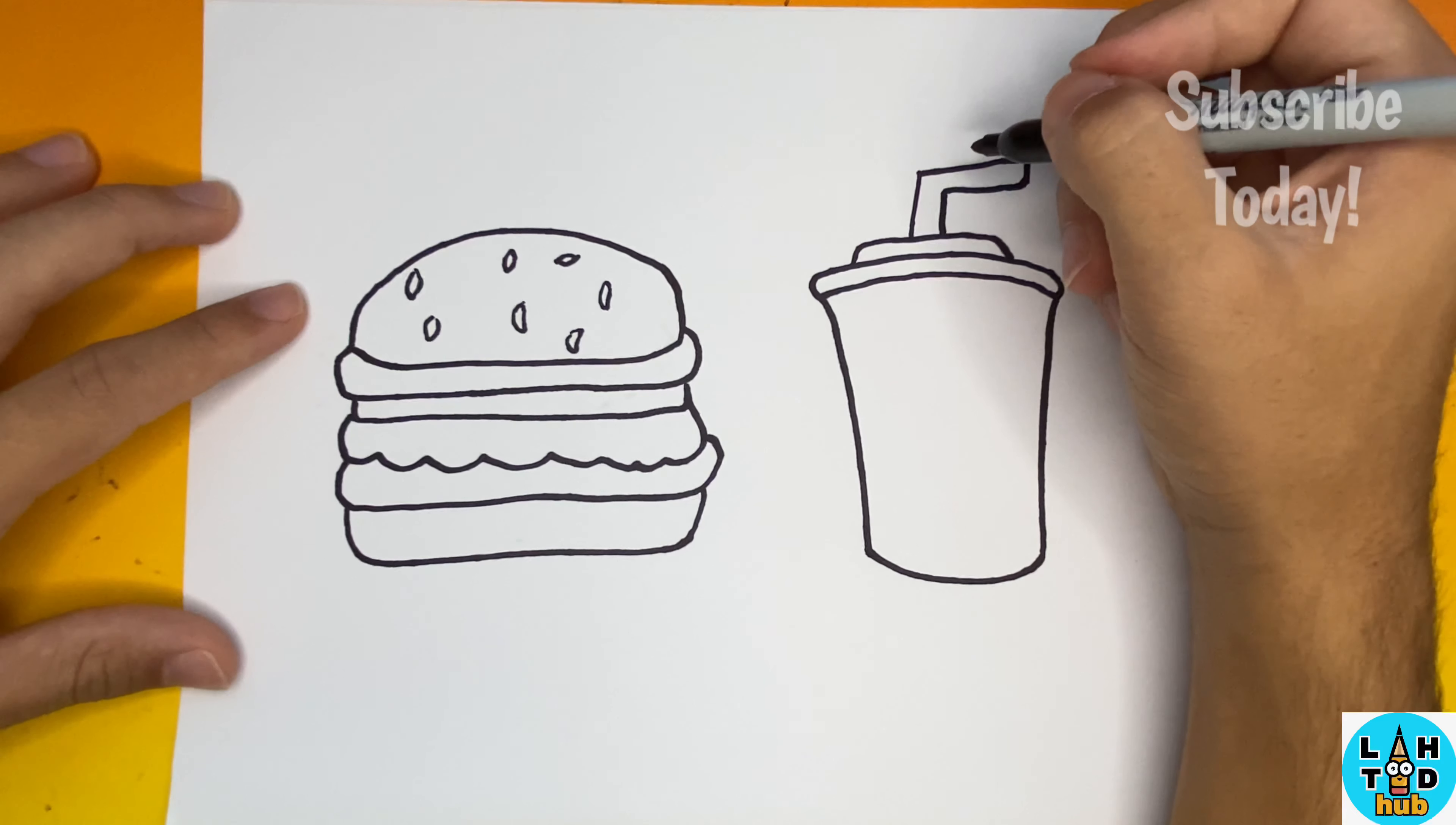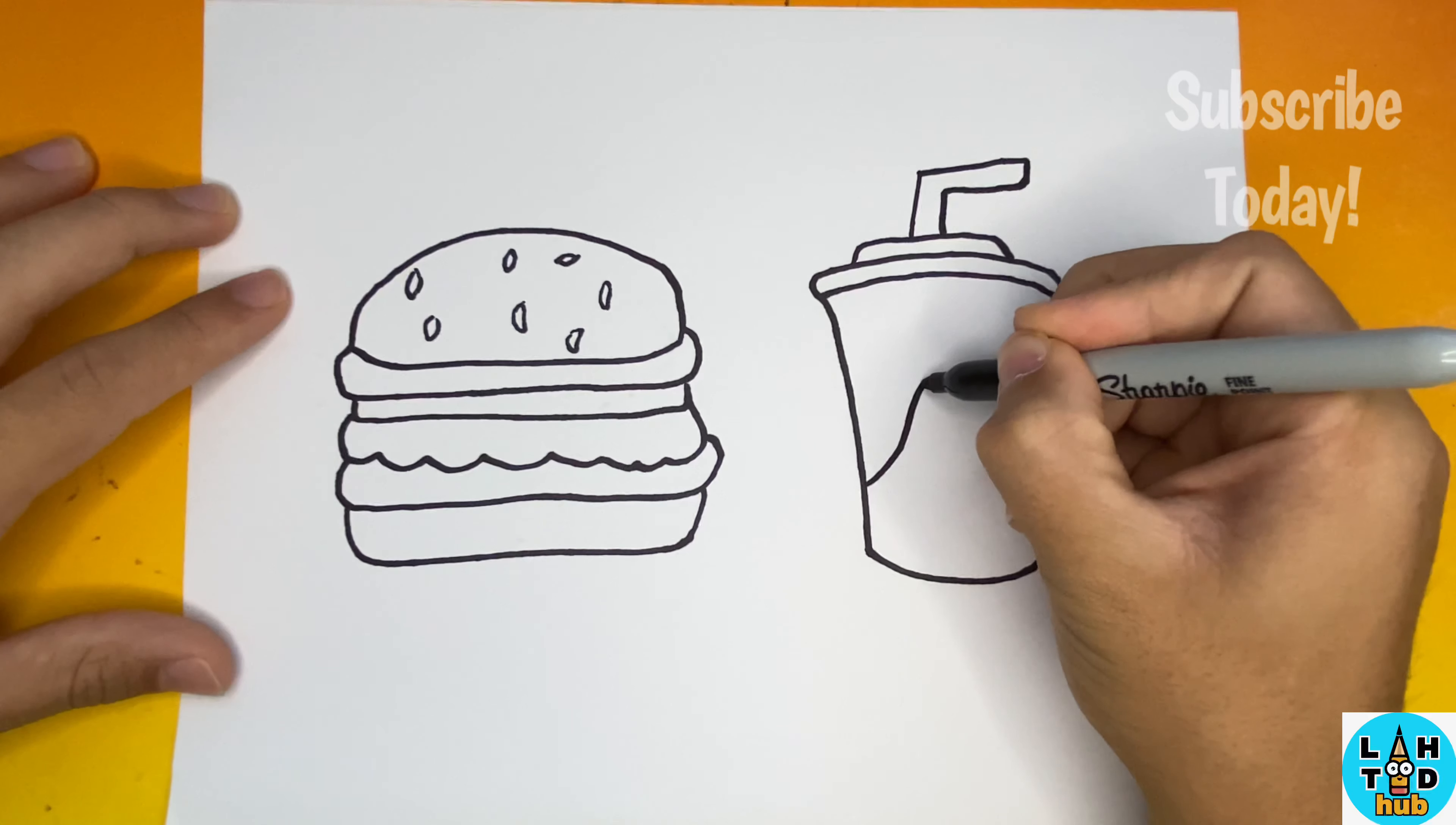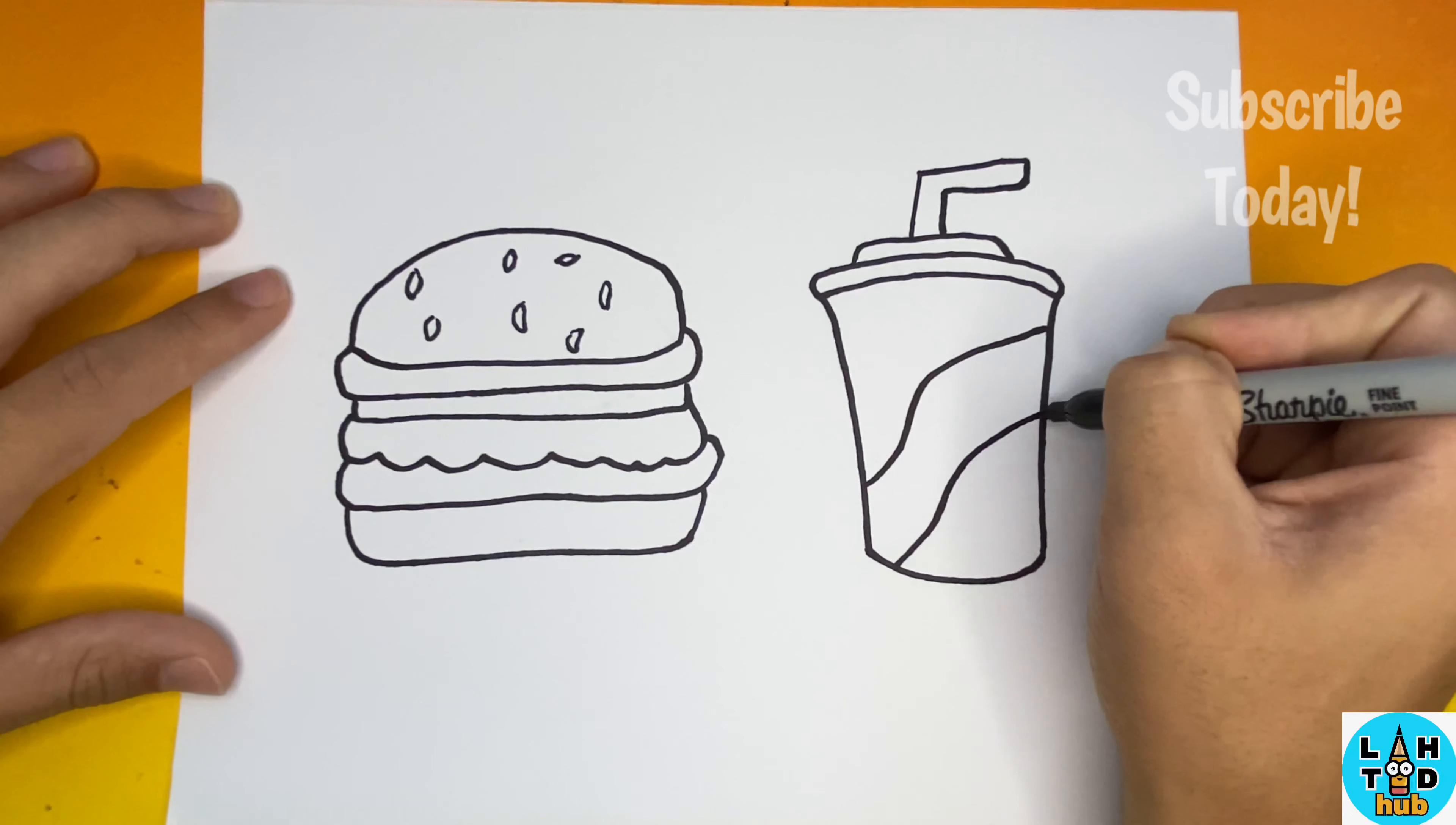Awesome, now we're almost finished. But for the last step I'm going to add a cool design to my cup. If you want to get a little crazy with your design, or if you don't want to add one at all, that's completely okay as well. Thanks for watching, learn how to draw. Now let's go color in our hamburger and drink together.